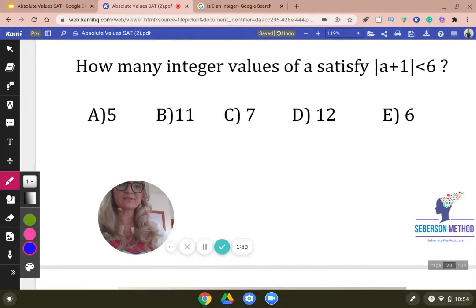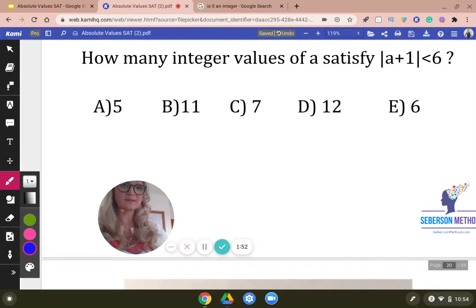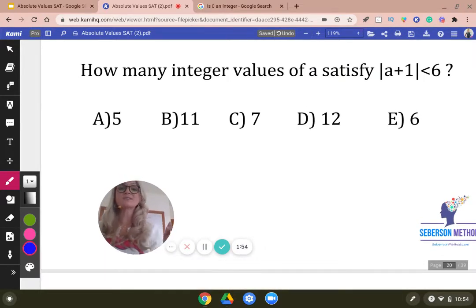Next. How many integer values satisfy |a+1| < 6? I want you to think about it deeply. So pause the video. Let's check it out. Can a be negative five? Can a be negative six? Perhaps. Oh, it can be. Because negative six plus one will be negative five, and absolute value of negative five is less than six.